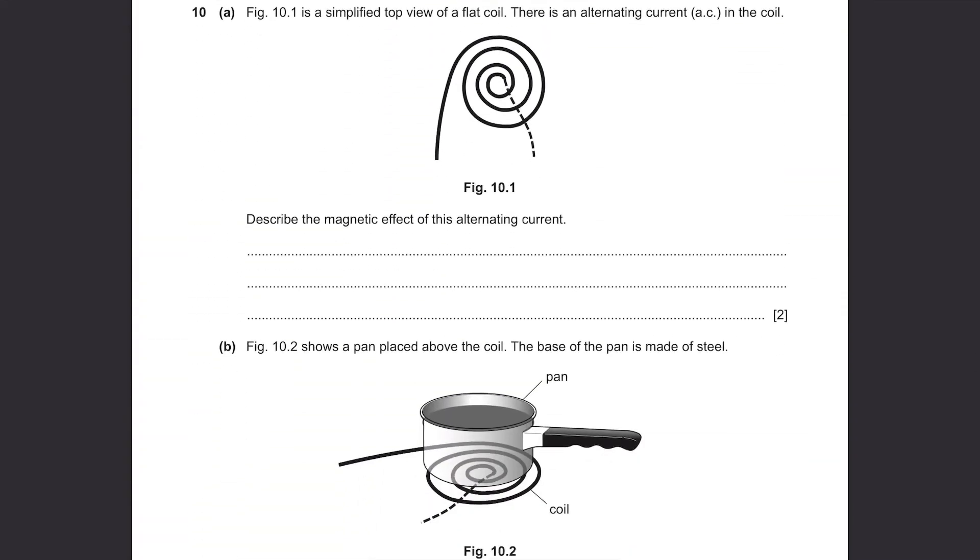Question 10 part A. Figure 10.1 is a simplified top view of a flat coil. There is an alternating current AC in the coil. Describe the magnetic effect of this alternating current. If there's AC current in a coil, a magnetic field will be produced which changes its direction all the time.